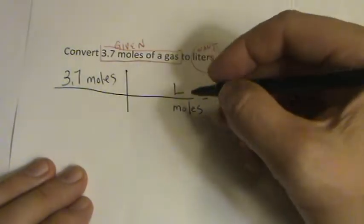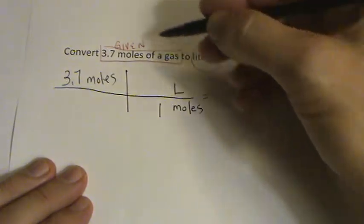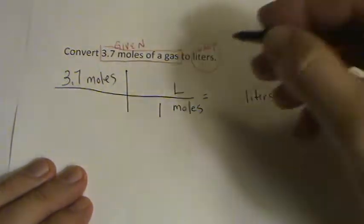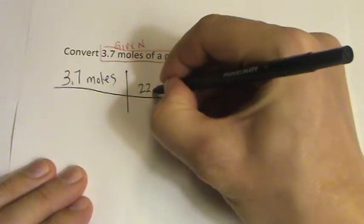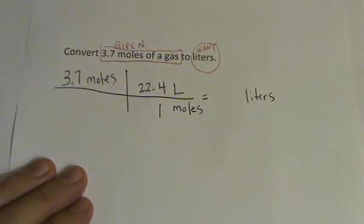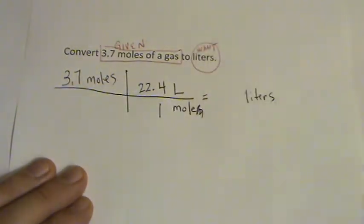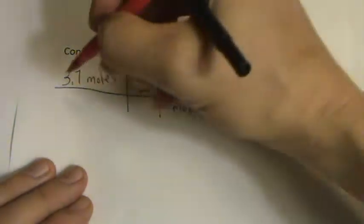Well, the conversion factor we're going to use is that one mole of any gas, so here they just say a general gas, but any gas, occupies 22.4 liters. That's a conversion factor you need to remember. One mole of a gas is 22.4 liters. Let's cancel our units out.